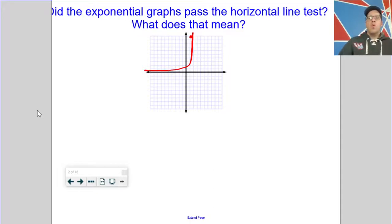All right. So when we looked at our exponential graphs, we saw that they passed the horizontal line test and the vertical line test. So what does that mean? Well, it means that if you plot the inverse, then both of those functions will be 1 to 1.